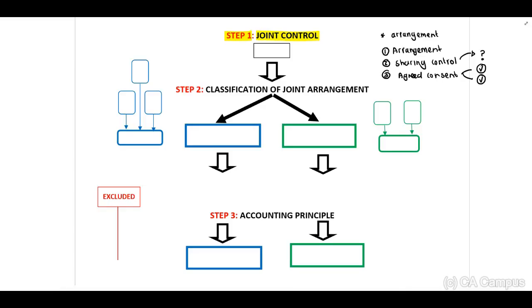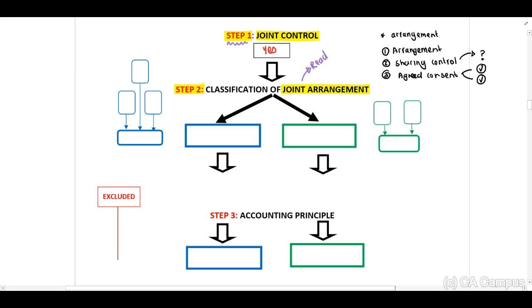In step one, if we have determined that there is joint control, we know that this will be a joint arrangement. When you read your questions in the test, you need to identify where you are within your steps — do you still have to discuss step one, or did the question already indicate that this is a joint arrangement and you only have to discuss step two? In step two, when we identify the classification of a joint arrangement, it can either be a joint venture or a joint operation.